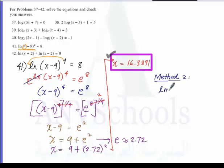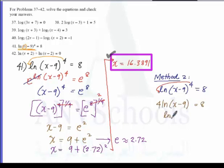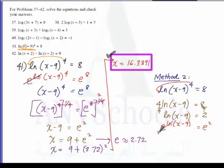For method 2, using the power rule: ln of x minus 9 raised to the 4th equals 8 becomes 4 times ln of x minus 9 equals 8. Dividing both sides by 4 gives ln of x minus 9 equals 2. Raising e to both sides: e to the ln of x minus 9 equals e squared, which cancels the natural log, giving x minus 9 equals e squared.